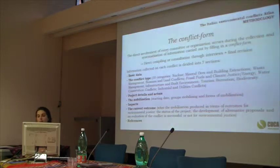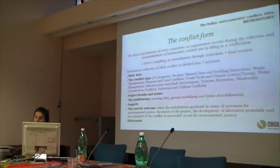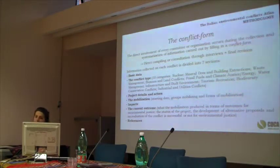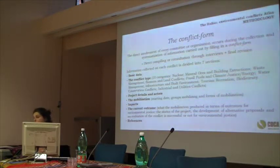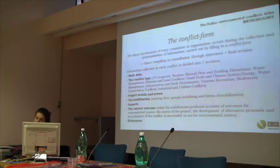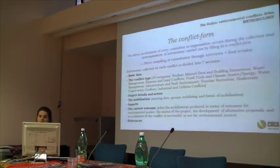How we collect information with local committees: we use a conflict form that is sent to committees in different ways, and we ask them to fill in the form or at least help us with interviews. After this process, once the conflict form is drafted, we have a final revision step with each committee. This permits us to control the quantity and quality of information we include. The information collected is divided into seven sections: general information, basic data about the project and conflict, and classification of the conflict within the ten EJAtlas categories.